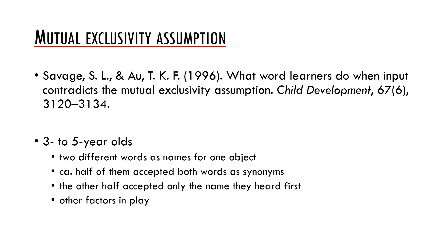This may serve as an argument that the mutual exclusivity assumption can be overridden by other factors. This makes sense because there are many synonyms in every language. Moreover, the mutual exclusivity assumption does not take into account early bilinguals, who normally acquire and use translation equivalents.